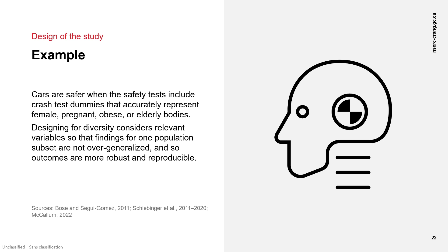Imagine you are researching safety features in a car. Most cars have been designed using crash test dummies based on what is assumed to be a standard adult male model that is scaled for varying heights and weights to account for people of different sizes. But research shows that safety tests using dummies that are more representative of female, pregnant, obese, or elderly bodies greatly improve the effectiveness of the seatbelts in preventing injuries and deaths. Inclusive design, in this case, is a matter of life and death.